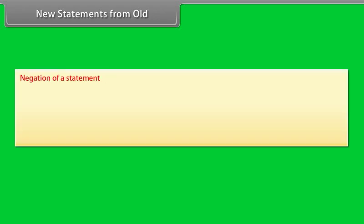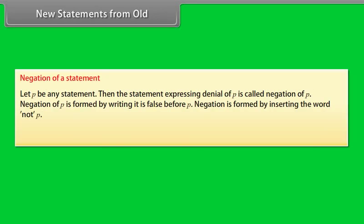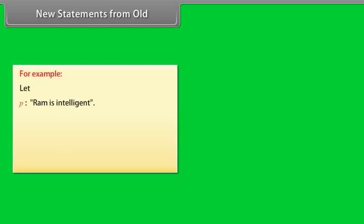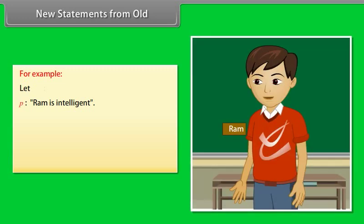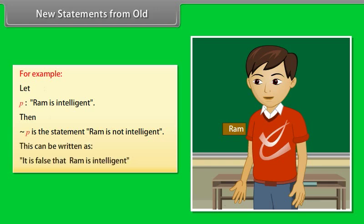Negation of a statement: Let P be any statement. The statement expressing denial of P is called the negation of P. Negation of P is formed by writing 'It is false that' before P, or by inserting the word 'not'. Negation of P is denoted as ¬P. For example, let P be 'Ram is intelligent.' Then ¬P is 'Ram is not intelligent,' or 'It is false that Ram is intelligent.'